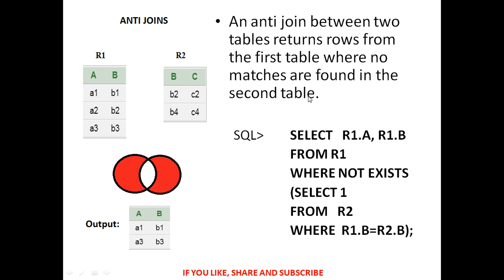Anti join: an anti join between two tables returns rows from the first table where no matches are found in the second table. The values not common in R2 are the result. For example, B4 is not common so only A1 and A3 are output; B2 is common so B2 is subtracted. This is similar to the minus operation. The SQL query is: SELECT R1.A, R1.B FROM R1 WHERE NOT EXISTS (SELECT 1 FROM R2 WHERE R1.B = R2.B).